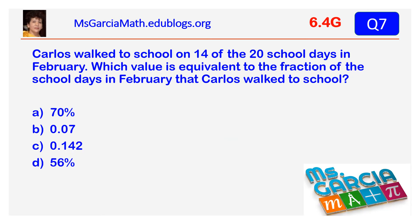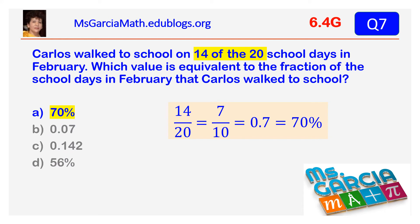Carlos walked to school on 14 of the 20 school days in February. Which value is equivalent to the fraction of the school days in February that Carlos walked to school? The answer is A: 70%.